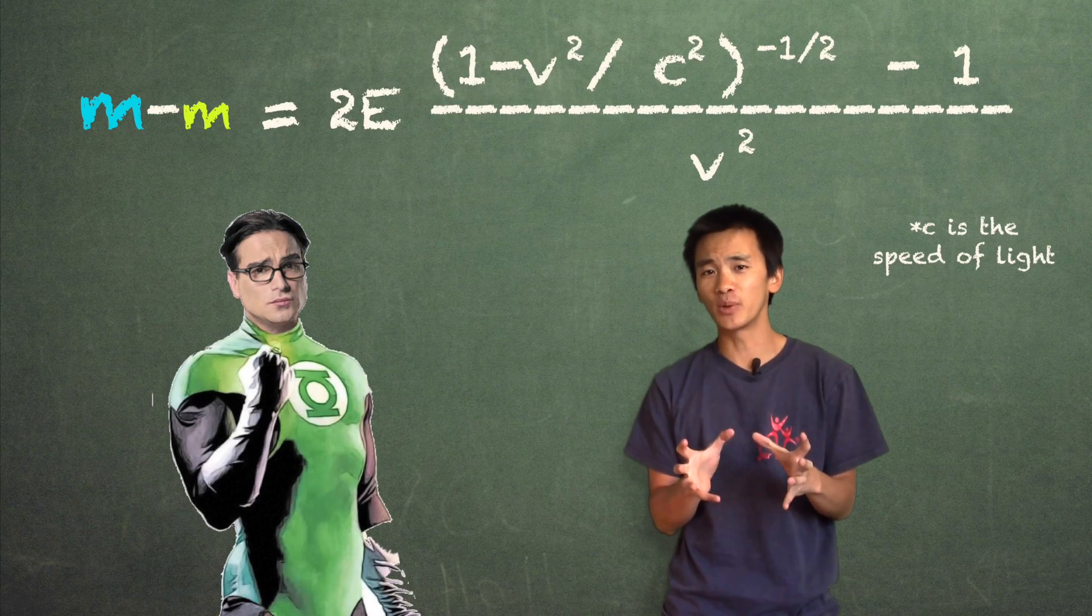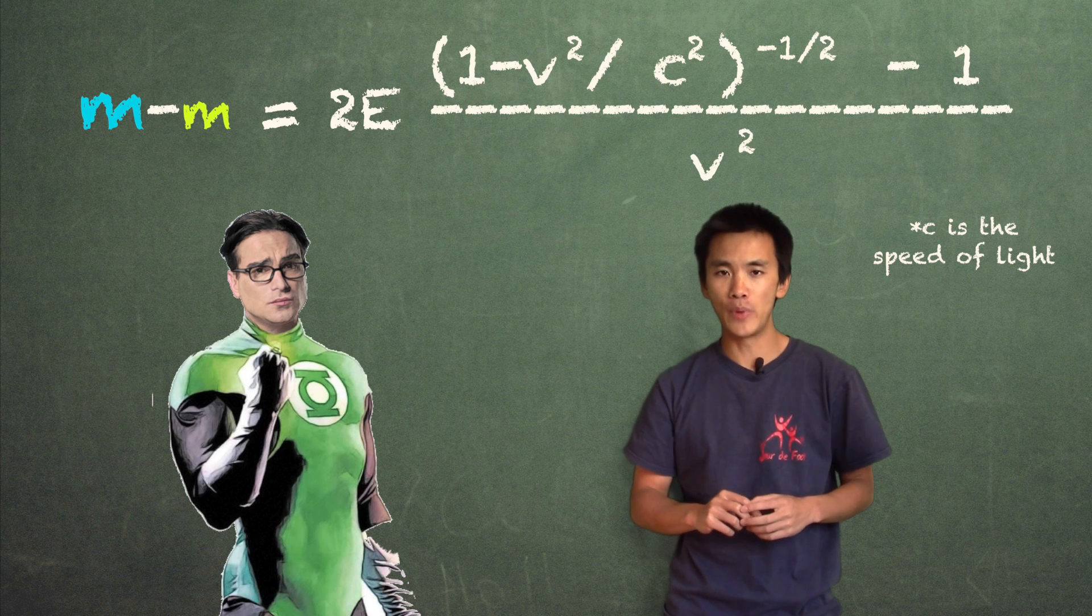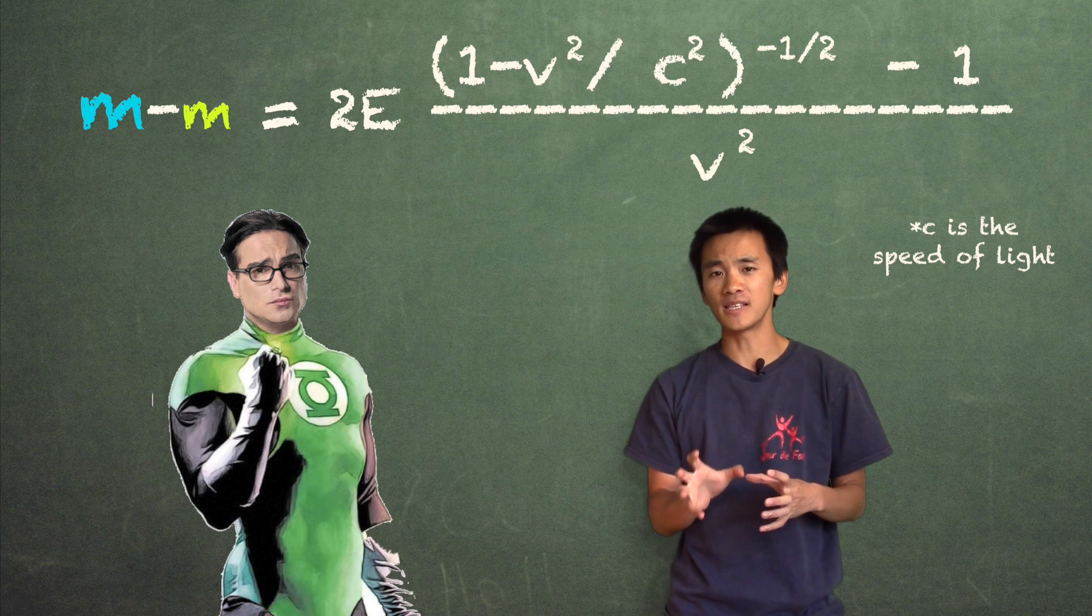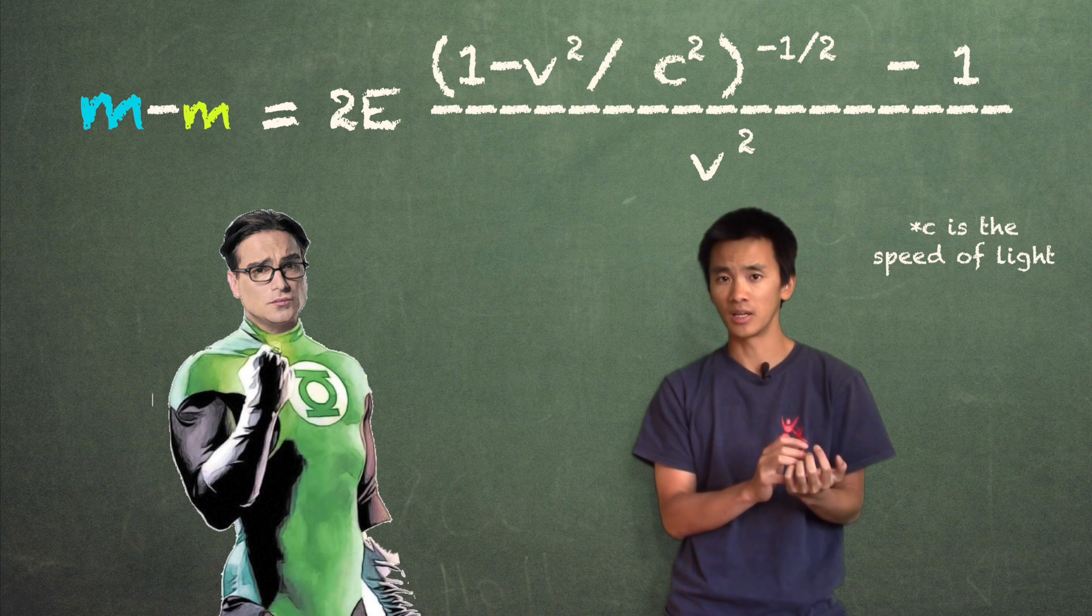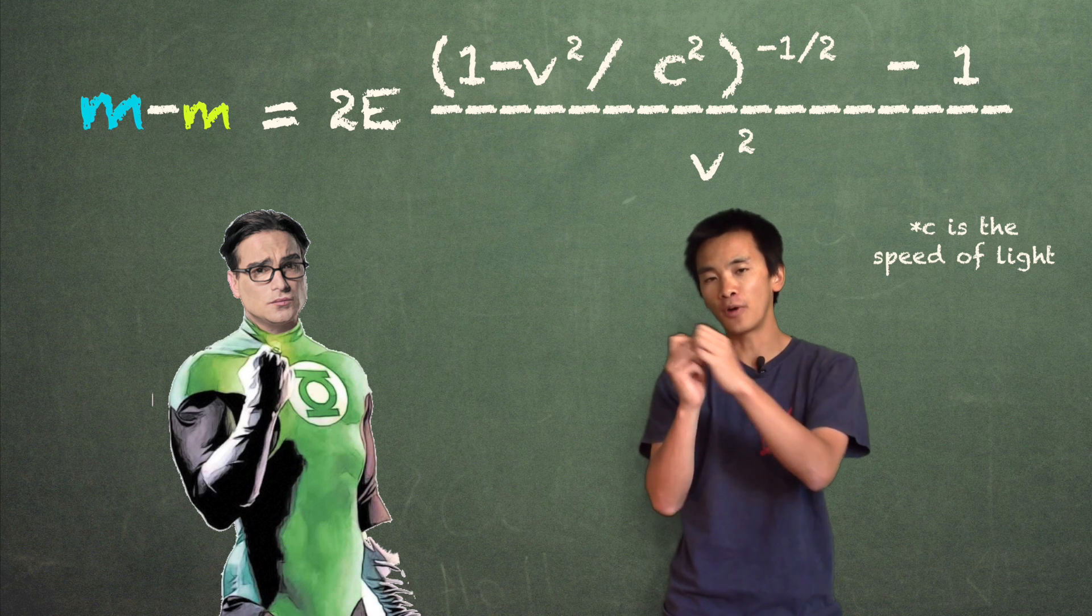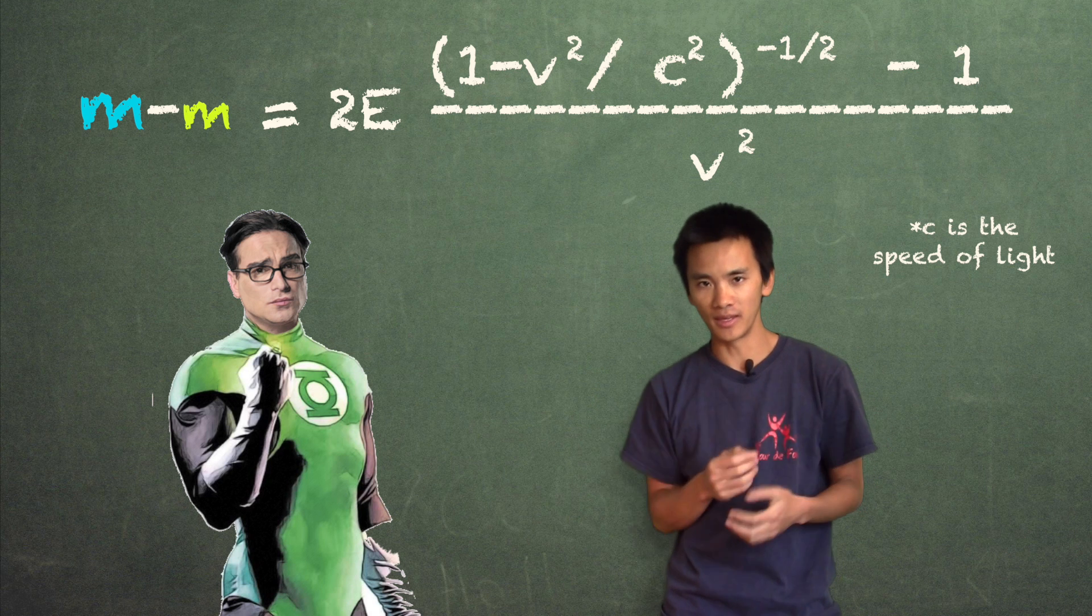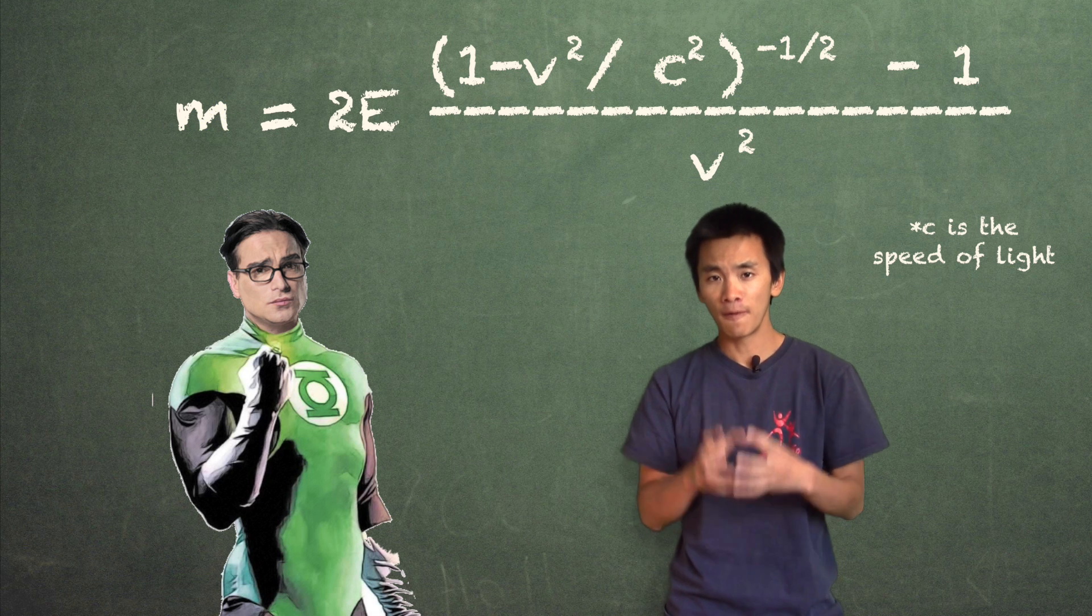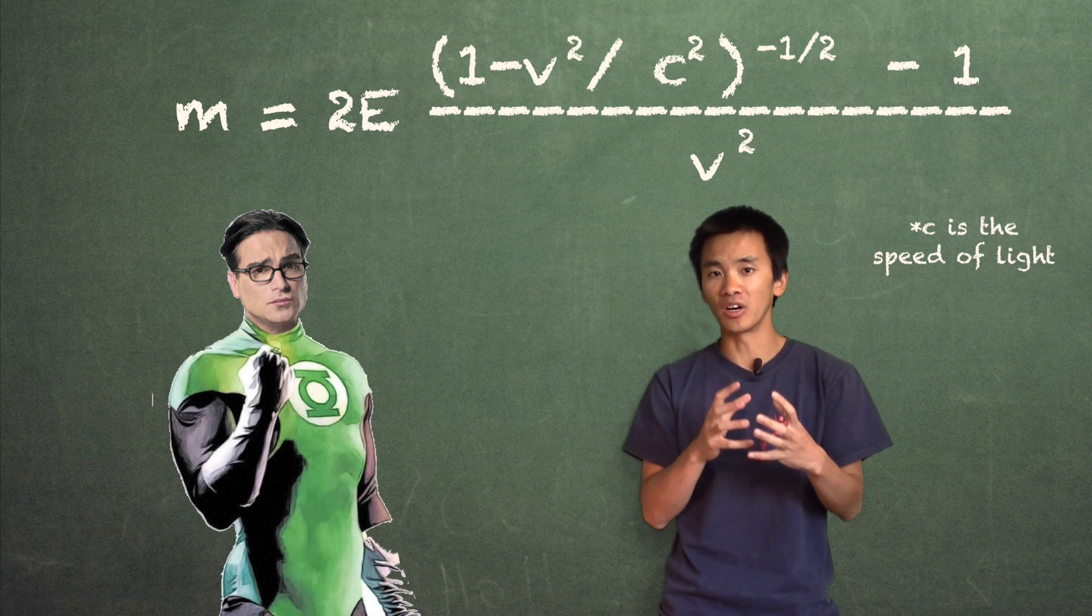I'm going to skip the calculations here, but in the end you get this nasty formula above. What this formula says is that the mass that Sheldon has lost according to Leonard is going to be two times the energy of the light beam from Sheldon's viewpoint times this nasty thing.